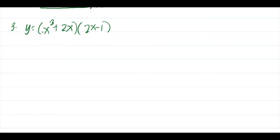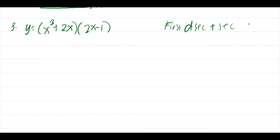Find the derivative of y equals (x cubed plus 2x) times (2x minus 1). This uses the rule for the derivative of a product. The mnemonic for this rule is: first times derivative of second, plus second times derivative of first.